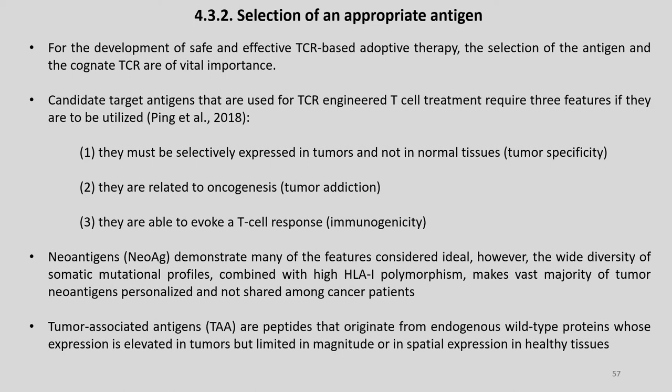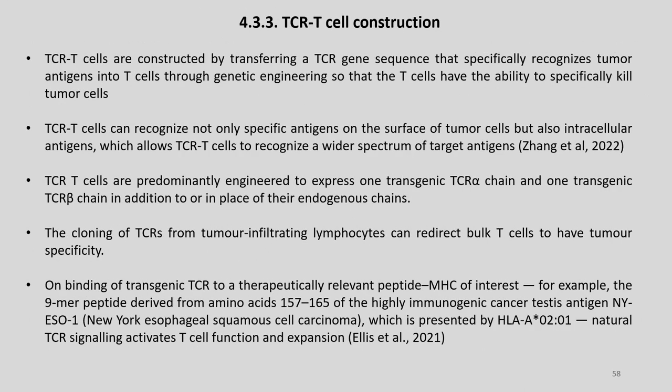Tumor-associated antigens are peptides that originate from endogenous wild-type proteins whose expression is elevated in tumors but limited in magnitude or spatial expression in healthy tissues. TCR-T cells are constructed by transferring a TCR gene sequence that specifically recognizes tumor antigens into T cells through genetic engineering, giving T cells the ability to specifically kill tumor cells. TCR-T cells can recognize not only specific antigens on the surface of tumor cells but also intracellular antigens, allowing recognition of a wider spectrum of target antigens. TCR-T cells are predominantly engineered to express one transgenic TCR alpha chain and one transgenic TCR beta chain in addition to or in place of their endogenous chains.